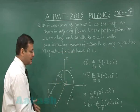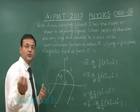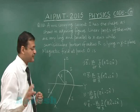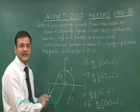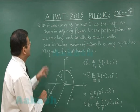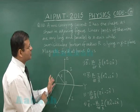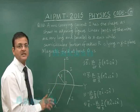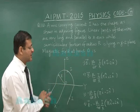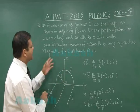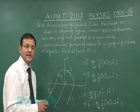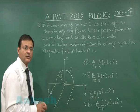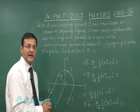The wire carrying current I has the shape as shown in the adjoining figure. Linear parts of the wire are very long and parallel to the x-axis. From my to your direction can be treated as x, right side is y, and upward side is z direction. The semicircular portion of radius R is lying in the y-z plane. Magnetic field at point O - the first thing you should always check is what is the net direction of magnetic field.